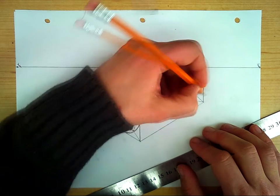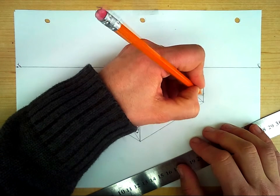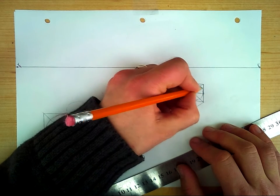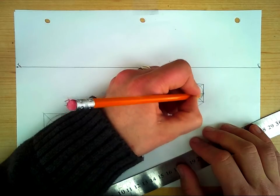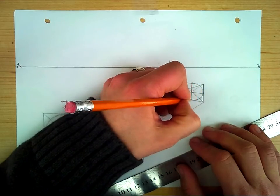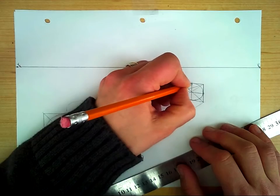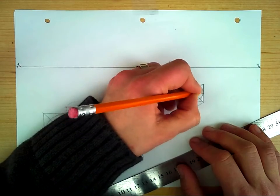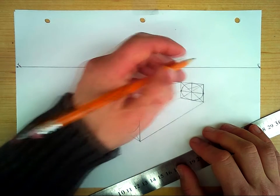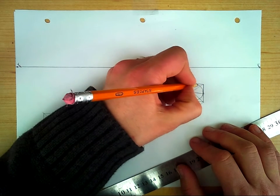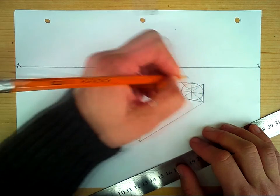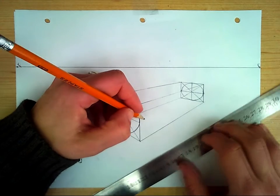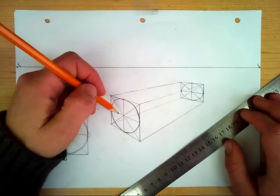We also need the same thing at the back face of the box here, through the middle points each time. I'm going to draw my curve. This is going to be a flatter ellipse because we're closer to the horizon line as we're going back. It looks a bit flatter than the one at the front. We have the front and the back face.